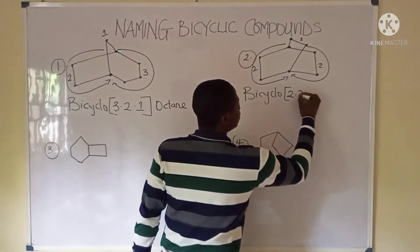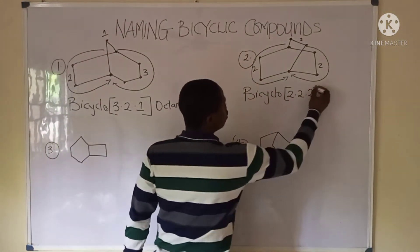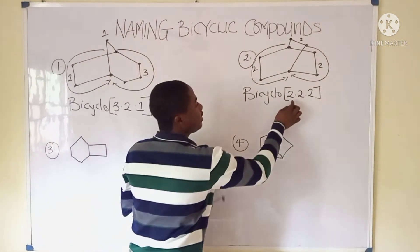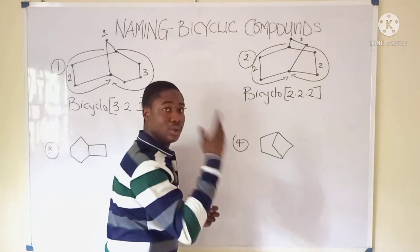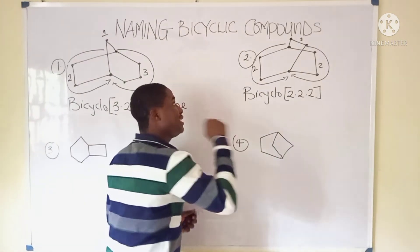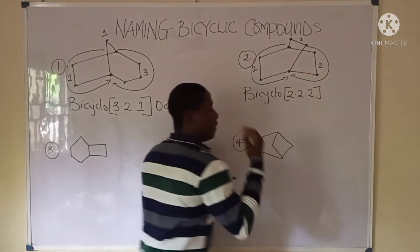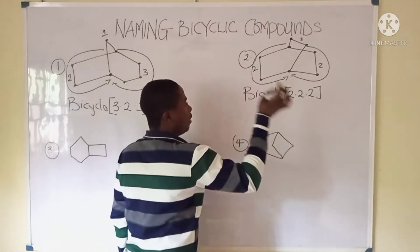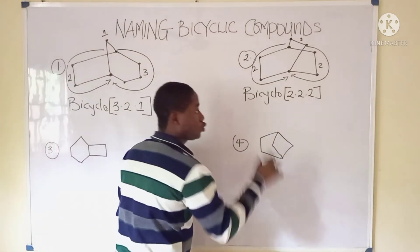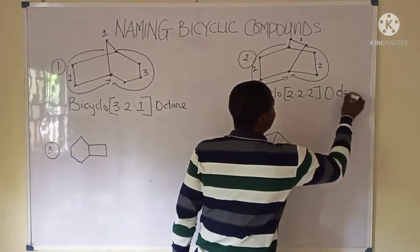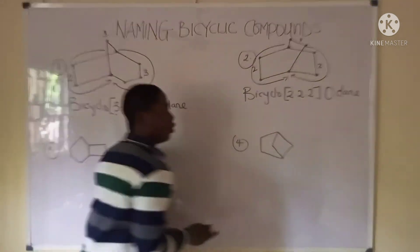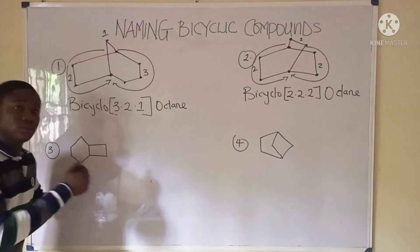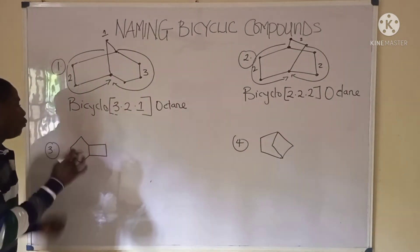The numbers are all equal, so we write bicyclo(2.2.2). Counting the carbons: two plus two plus two equals six, plus the two bridgehead carbons equals eight, so it is called bicyclo[2.2.2]octane.